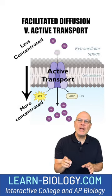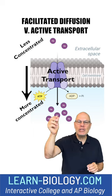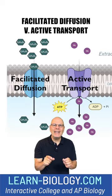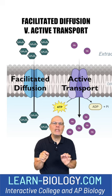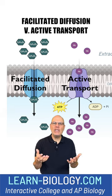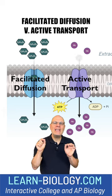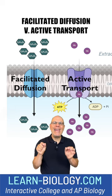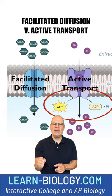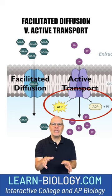In active transport, it's the opposite — they're moving from less concentrated to more concentrated. But more importantly, in active transport, you're always going to see some energy input to that protein channel, and that's usually ATP getting converted to ADP. Look for that and you'll know the difference.